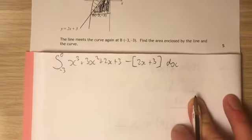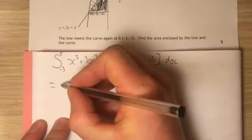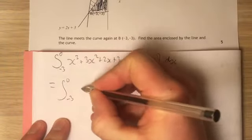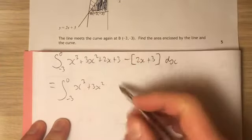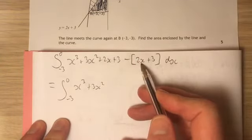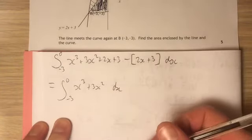Why? Well, in this case, it's a particularly good example, because if you do this subtraction, I've got the integral between negative 3 and 0. I've got x cubed plus 3x squared. 2x is cancelled out. The 3 is cancelled out. So my life is looking much simpler.